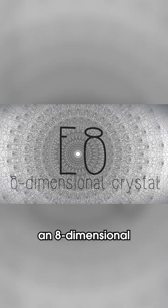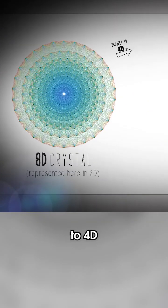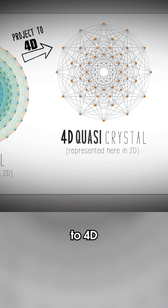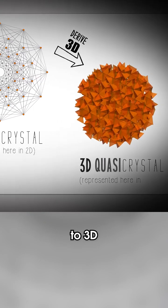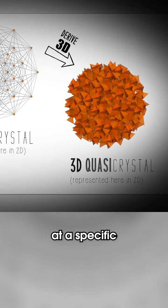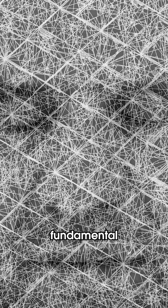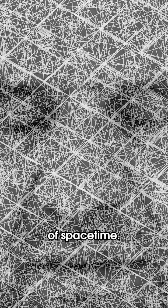The E8 lattice is actually an eight-dimensional crystal. Klee's group projects this E8 crystal from 8D to 4D to 3D at a specific irrational angle to form their theorized fundamental substructure of spacetime.